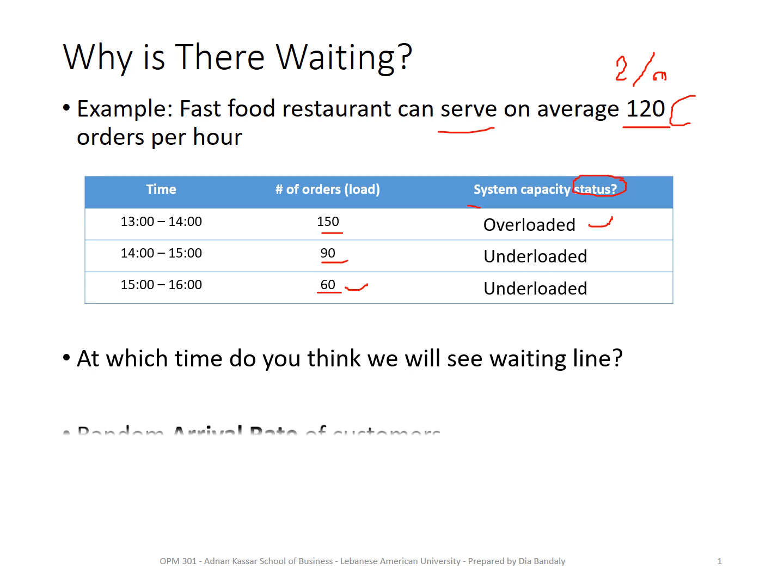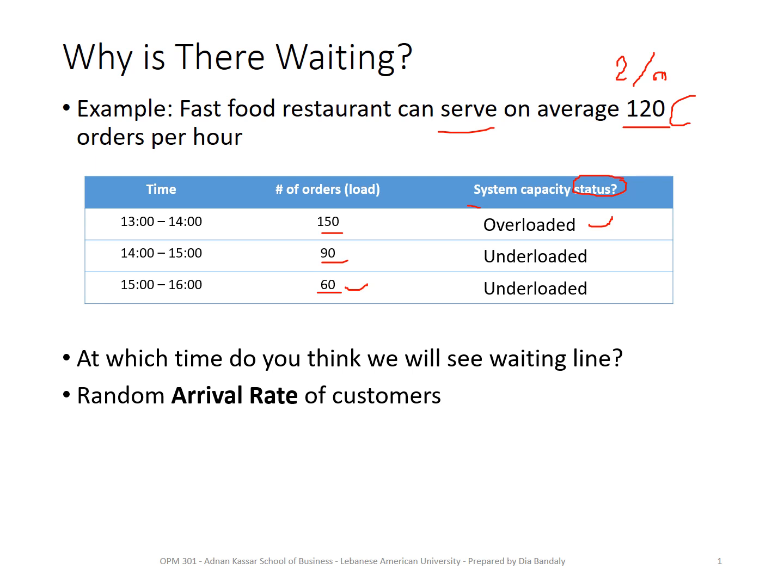What we can say is that arrivals are random — you cannot control the arrivals to your system. And due to this randomness, you will suddenly have an overloaded system.